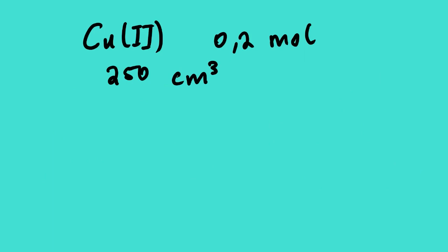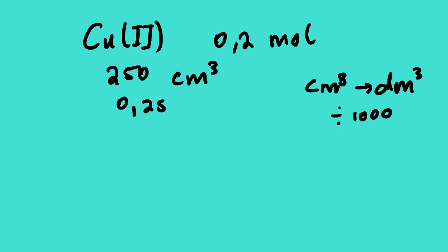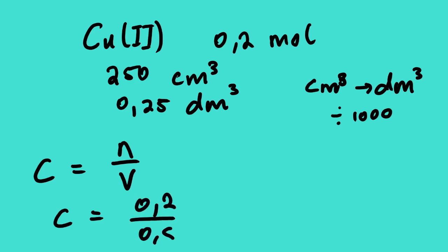Our first example: we have copper(II) which has 0.2 mol and we are given the volume as 250 cm³. We need to convert 250 cm³ to dm³. From cm³ to dm³ we divide by 1000, so 250 cm³ divided by 1000 gives 0.25 dm³. Now we calculate molarity: C = n/V = 0.2 over 0.25, so C equals 0.8 mol per dm³.